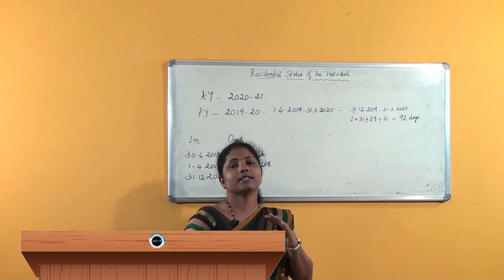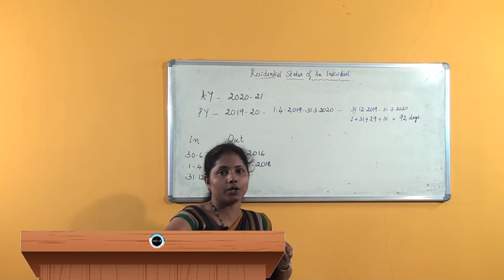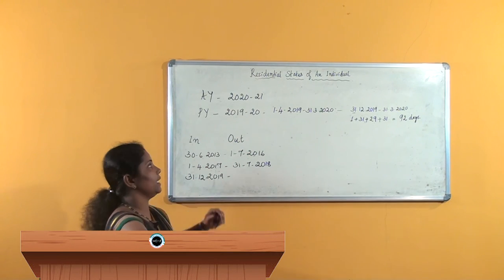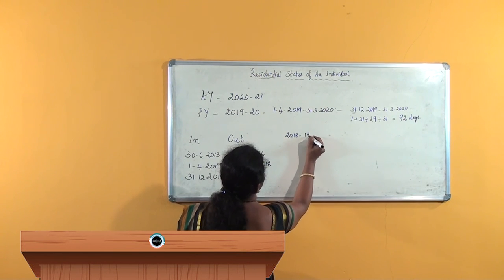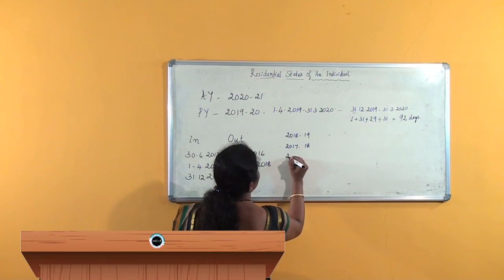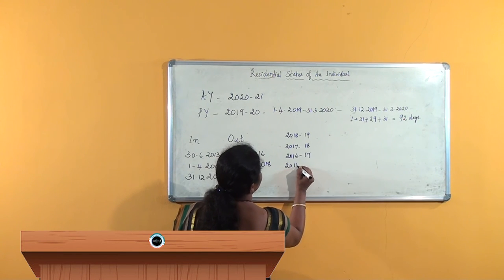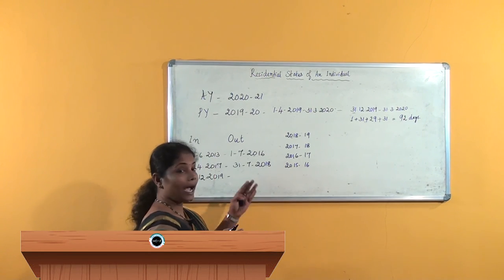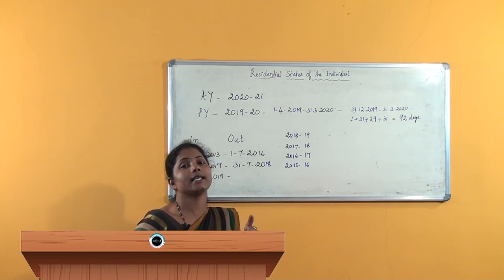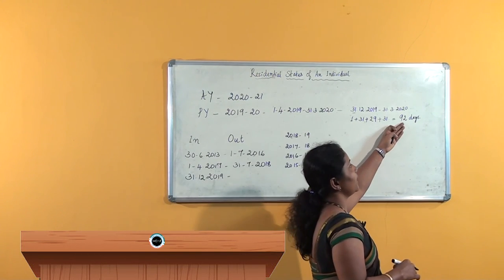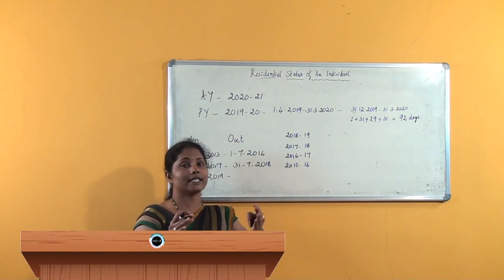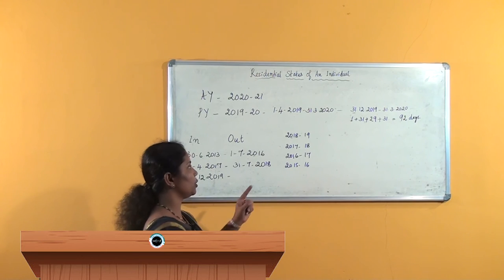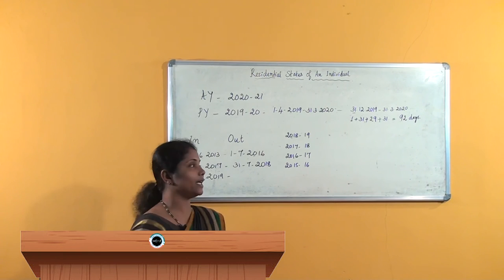What about the second basic condition? He must stay in India for 365 days or more in the 4 years preceding the previous year. The previous year is 2019-20, so the preceding 4 years are 2018-19, 2017-18, 2016-17, and 2015-16. In these 4 years he must stay in India for 365 days or more, and along with that he must stay in India for at least 60 days in the relevant previous year. He was in India for 92 days in the relevant previous year — more than 60 days. Now we have to check 365 days in the preceding 4 years. In the year 2018-19, how many days was he in India?